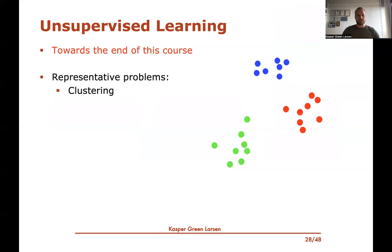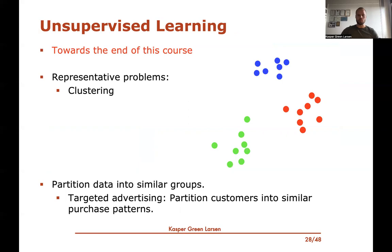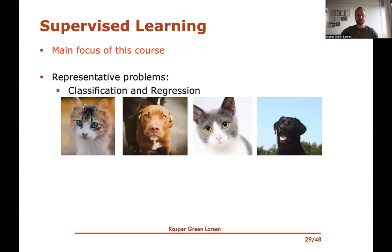Unsupervised learning is the next type of learning that we look at mostly towards the end of the course. Clustering is a classic example of unsupervised learning. The idea is that you have some data and you'd like to partition it into similar groups. For instance, maybe I'm a store and I want to do some targeted advertisement — I want to create three different catalogs, so I want to partition customers into groups with similar purchase patterns. That's an example of unsupervised learning.